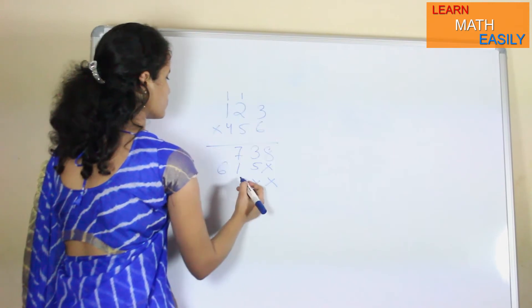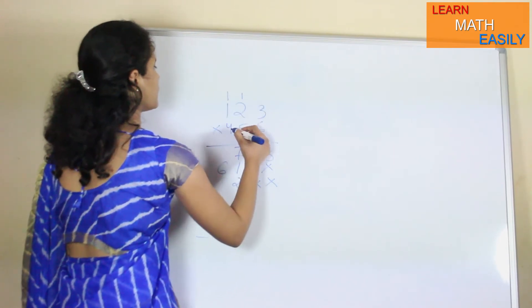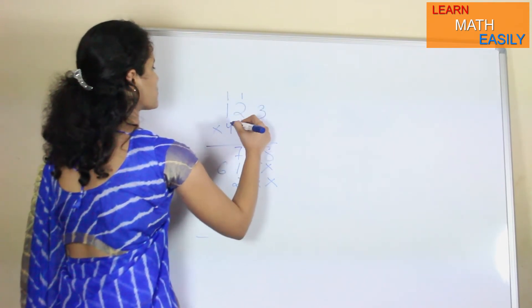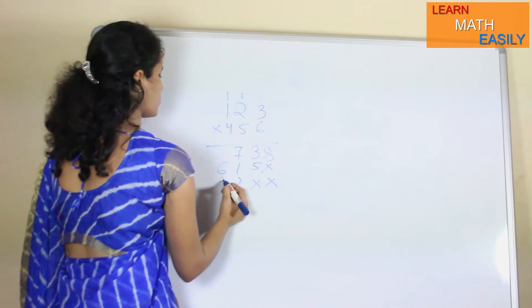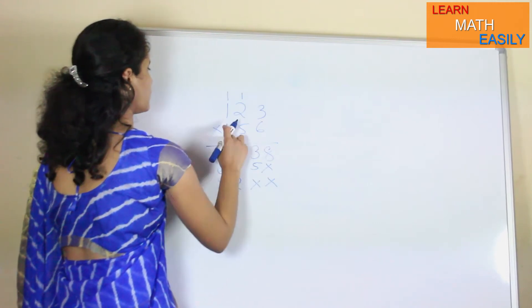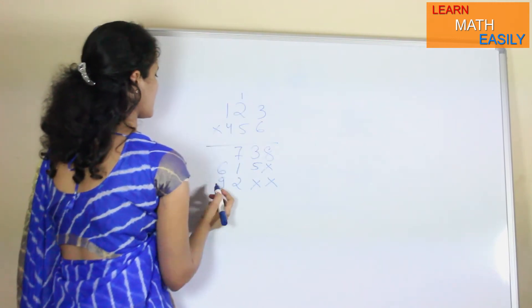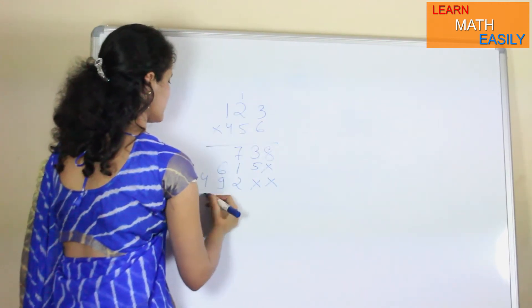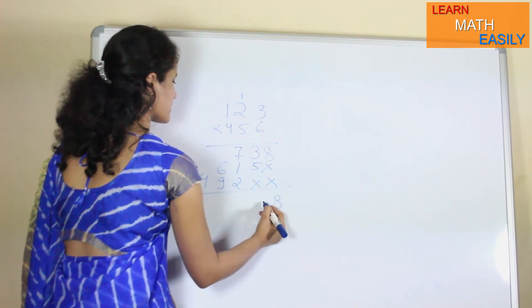Then 4 multiplied by 3 gives 12 here. Then 4 multiplied by 2 gives 8 plus 1 equals 9 here. 4 multiplied by 1 is 4 here. Then you have the partial products to add up.